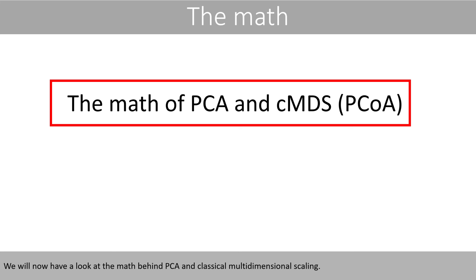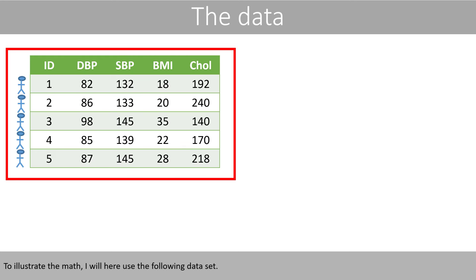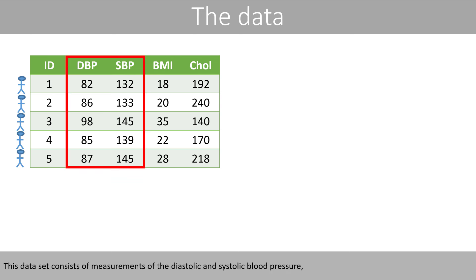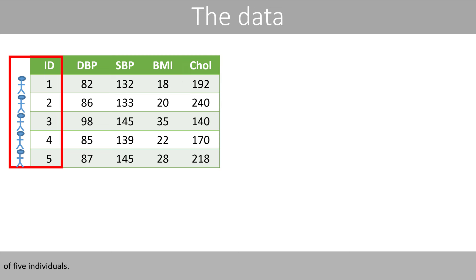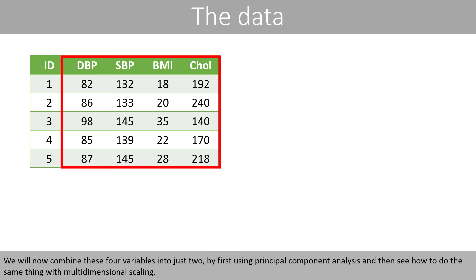We will now have a look at the math behind PCA and classical multidimensional scaling, PCoA. To illustrate the math, I will use the following dataset, which consists of measurements of the diastolic and systolic blood pressure, the body mass index, and the total cholesterol level of five individuals. We will now combine these four variables into just two by first using principal component analysis, and then see how to do the same thing with multidimensional scaling.